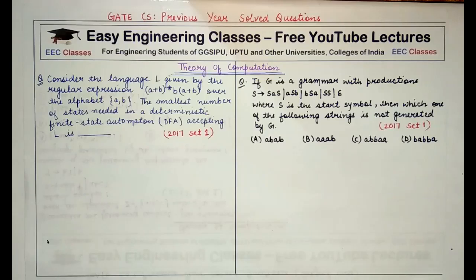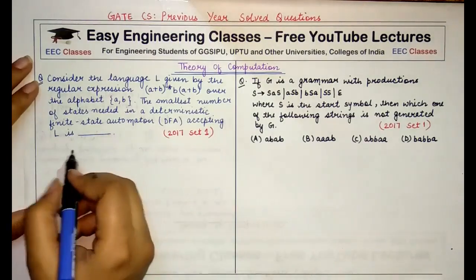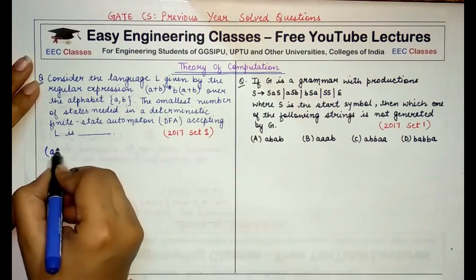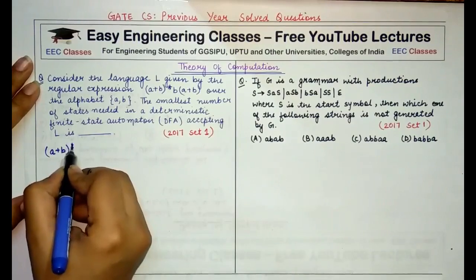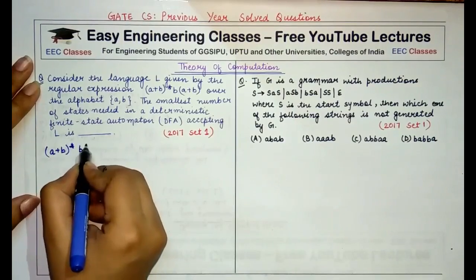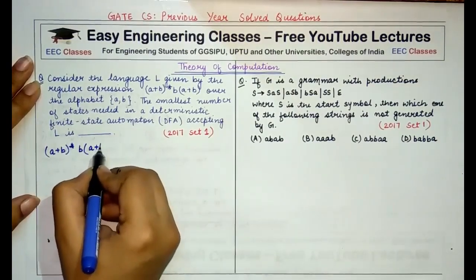The first question reads: consider the language L given by the regular expression (a+b)* followed by b and followed by (a+b), over the alphabet {a, b}. The smallest number of states needed in the deterministic finite automata accepting L is? The regular expression we are provided with is (a+b)* followed by b followed by (a+b).